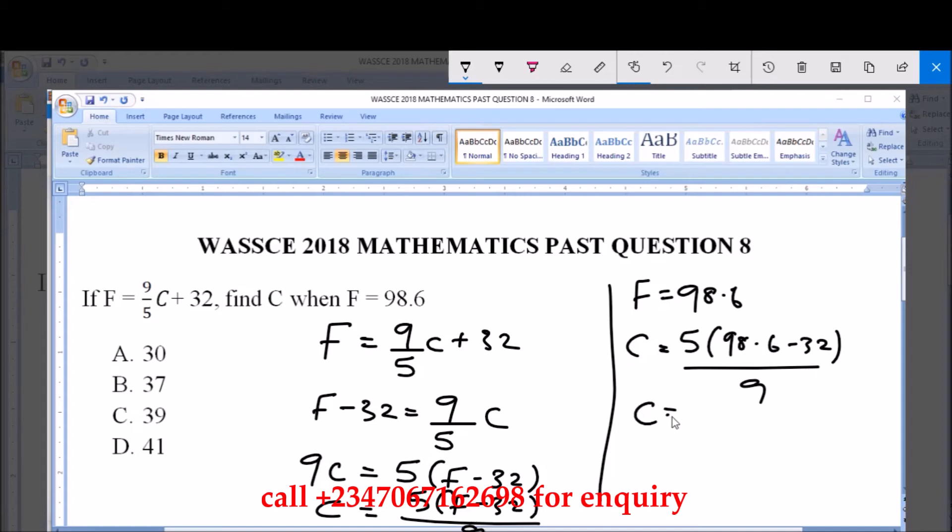Now C equals 5 times (98.6 minus 32) which gives us 333 all over 9, and this equals 37. So 37 is the value for C when F equals 98.6, and that is option B.